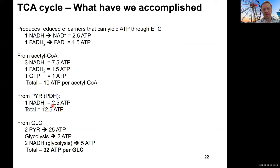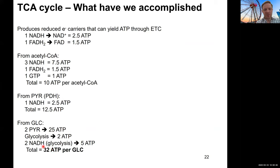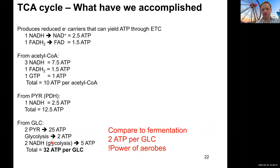Going all the way back to glucose: we generated 2 pyruvates, so both reactions happen twice, doubling our 12.5 to 25 ATP. In addition, glycolysis had a net ATP yield of 2 ATP and also released 2 NADH from reaction 6, contributing another 5 ATP. So the total from one molecule of glucose via cellular respiration is 32 ATP. Comparing this to fermentation, where the total net yield is only 2 ATP per glucose, this shows the power of aerobic metabolism — using oxygen allows you to make 16 times more ATP per glucose.